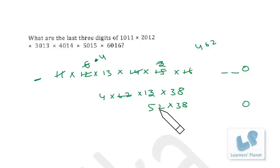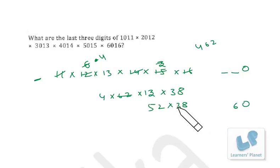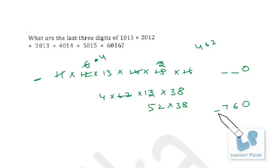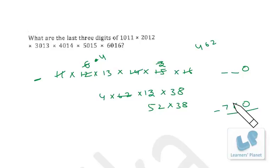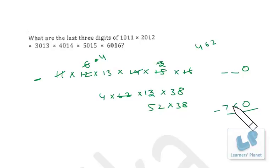We already have 0 as the unit digit. Multiplying 52 × 38: 8×2 = 16, so we get 6, carry 1; next digit gives 7. So the last two digits are 76, and combining with 0 we get 760. The answer is 760.